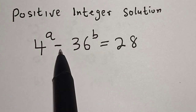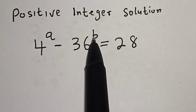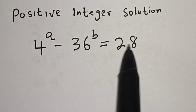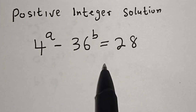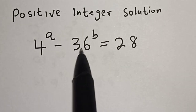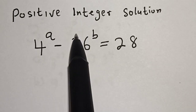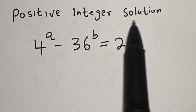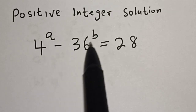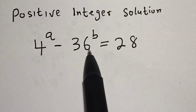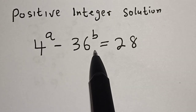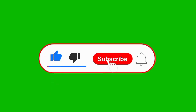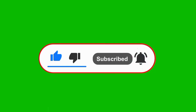4 to the power of a minus 36 to the power of b is equal to 28. Hi everyone, welcome to my class. In this class we want to find the positive integer solution of a and b from this given equation. But before we proceed, please don't forget to like, share, comment and subscribe.